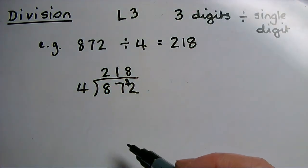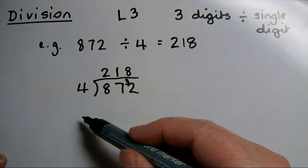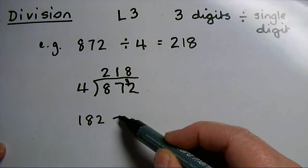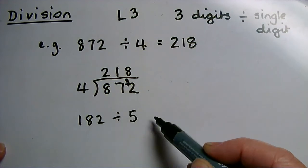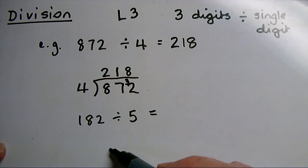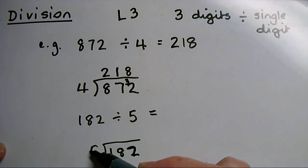Sometimes it won't work out exactly, so I'm going to do a different sum, which is 182 divided by 5, and we'll see what's the difference with that. I put the larger number that needs to be divided underneath the bus stop, and I put the 5 on the front.